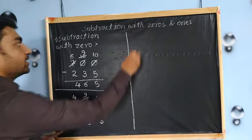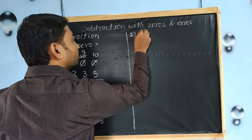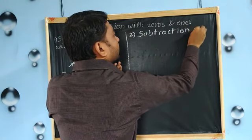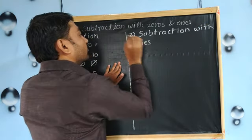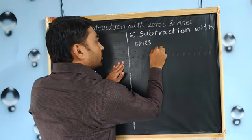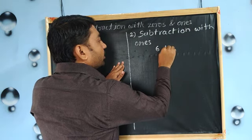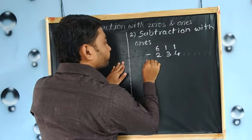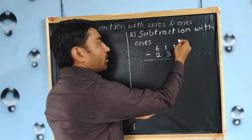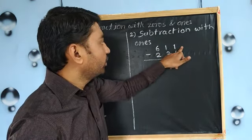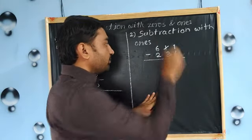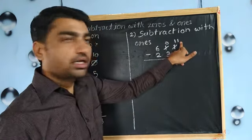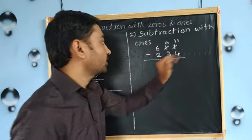Next is the second part: subtraction with ones. So here the example is six hundred eleven minus two hundred thirty-four. Here one is smaller than four, so we need to use the regrouping method. We will borrow one from tens place — then zero will remain there — and this will become eleven. Eleven minus four equals seven.